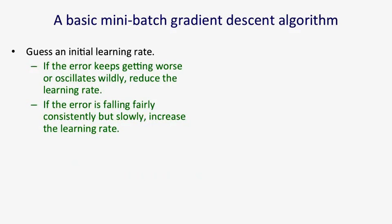I'm now going to describe a basic mini-batch gradient descent learning algorithm. This is what most people would use when they started training a big neural net on a big redundant data set. You start by guessing an initial learning rate, and you look to see if the network learns satisfactorily or if the error keeps getting worse or oscillates wildly. If that happens, you reduce the learning rate.